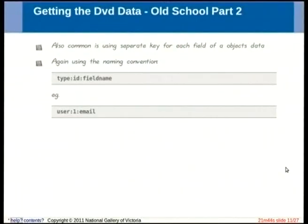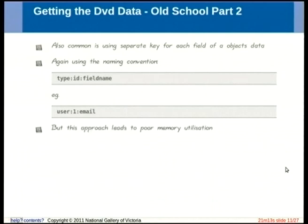What I mean is you have a separate key for each field of an object. For instance, to store user one's email: user colon one colon email; to store their first name: user colon one colon first name. You have a whole bunch of keys representing values for all the fields of an object, and you tie them together only by the naming scheme. Redis doesn't care what you've called your key, so it's simply up to your naming convention to keep things sane.